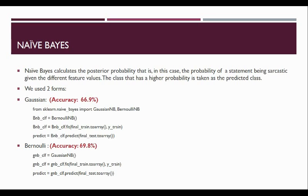Let's start with the Naive Bayes model. Naive Bayes calculates the posterior probability, that is, in this case, the probability of a sentence being sarcastic given its different feature values. The class with a higher posterior probability is taken as a predatory class. We implemented two forms of Naive Bayes, that's the Gaussian and the Bernoulli Naive Bayes, and we implemented these models using the sklearn toolkit in Python. We got an accuracy of 66.9% and 69.8% respectively.